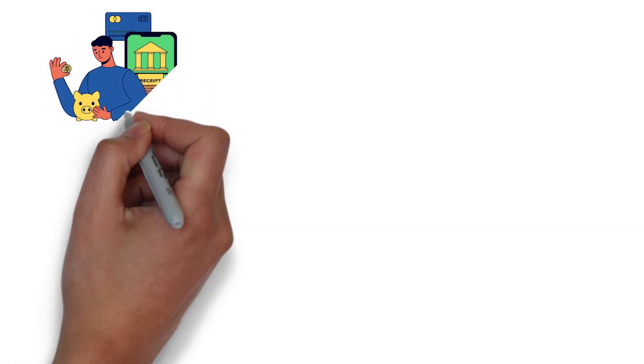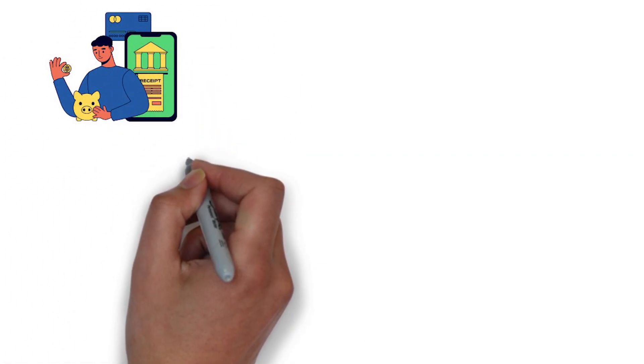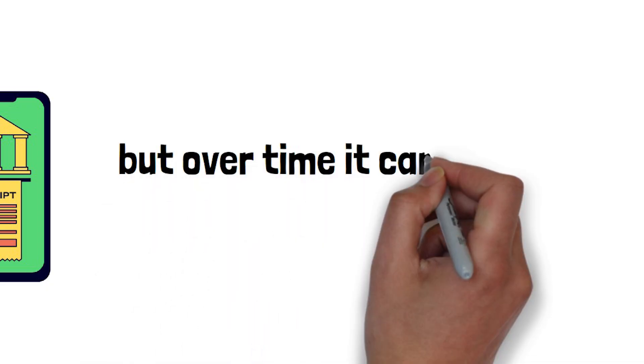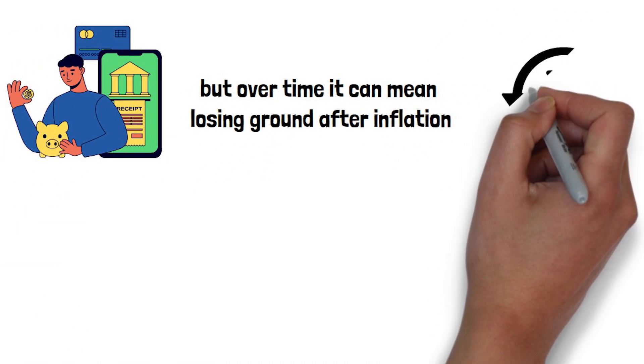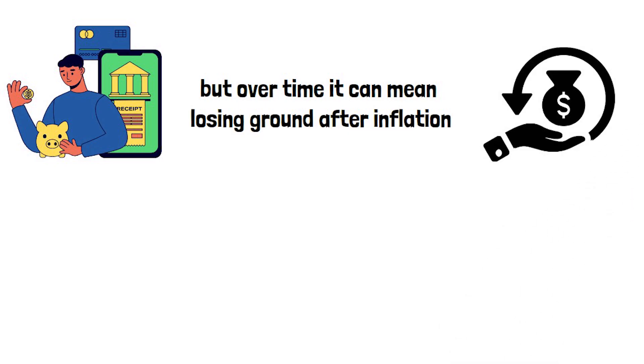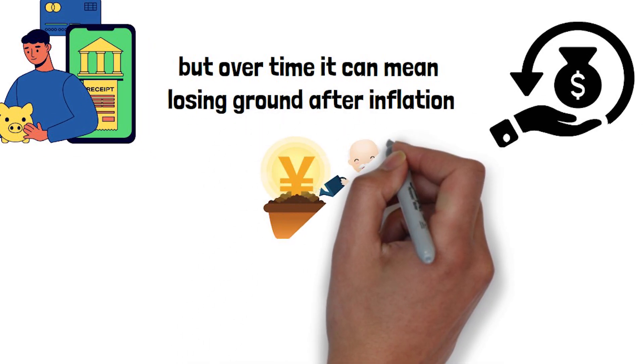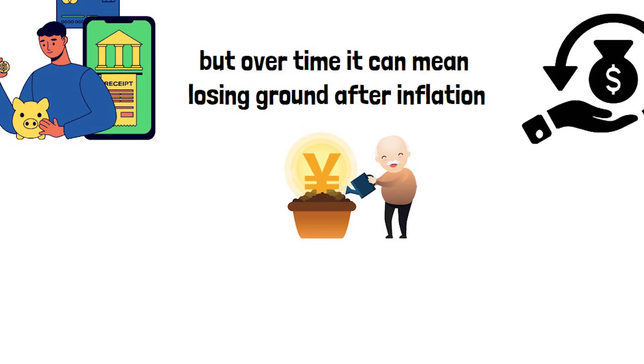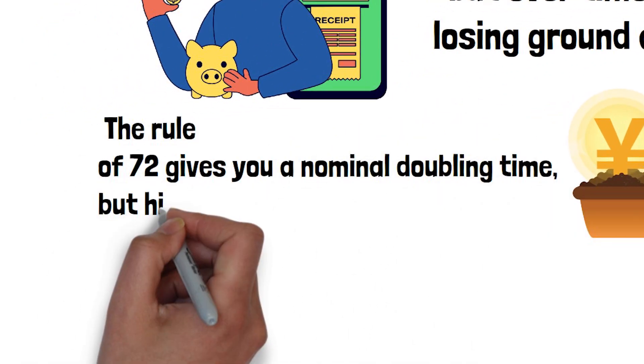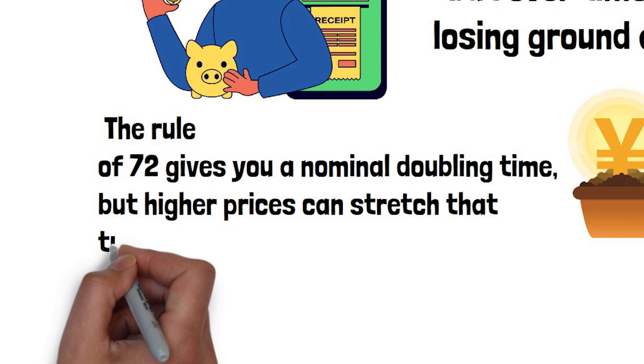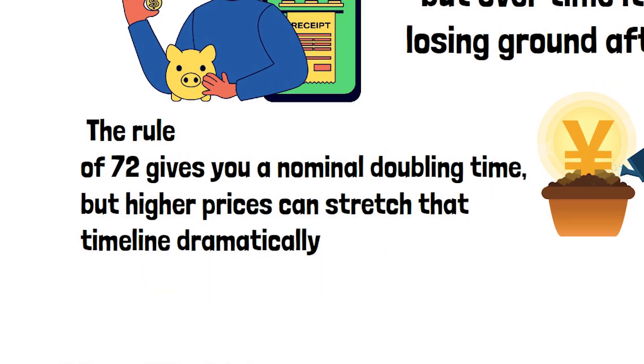On the flip side, keeping everything in treasuries or savings accounts might feel safe, but over time, it can mean losing ground after inflation. Return alone doesn't tell the whole story. Inflation quietly affects the real pace of wealth building. The rule of 72 gives you a nominal doubling time, but higher prices can stretch that timeline dramatically.